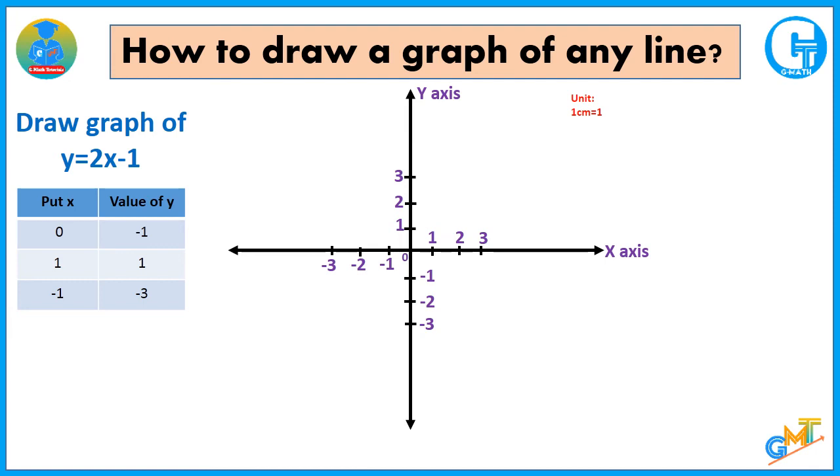Put 0, minus 1 on the graph. That is 0, minus 1 here. Then 1, 1 here. Minus 1, minus 3 becomes here. Then draw the line which passes through all these three points, we get like that.